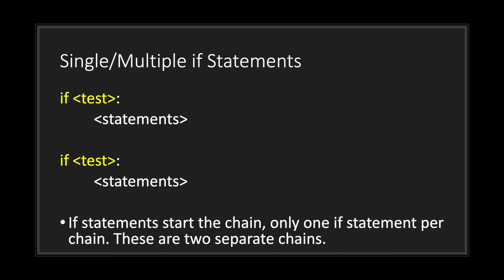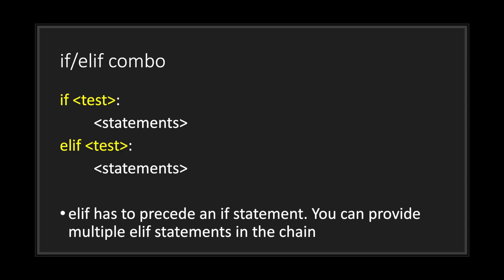Let's take a look at another example — the if-else if combo. The else if has to proceed an if statement, and you can provide multiple else if statements in your chain. If the if test is false, we move on to the else if statement. If the else if test is true, we execute everything in that block and exit the chain. However, if the else if test is false, we skip that block and exit the chain.